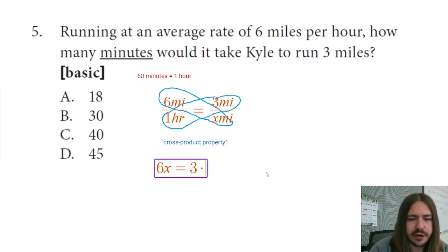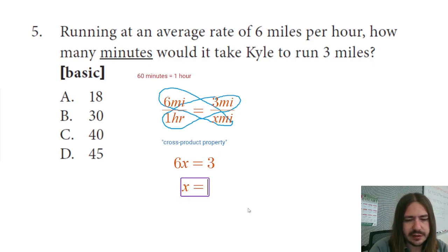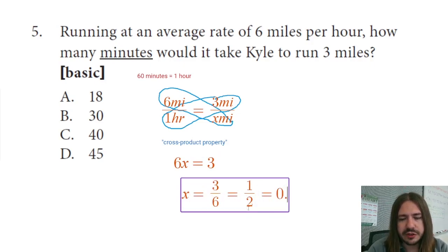equals three times one. Three times one, as you should know, is just three. And so to solve this, we would divide both sides by six. So we get x equals three over six, which is one half or 0.5.